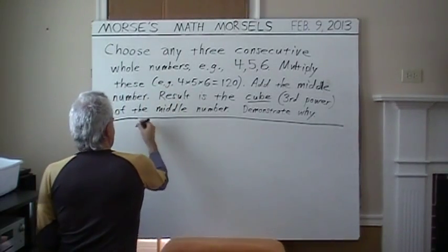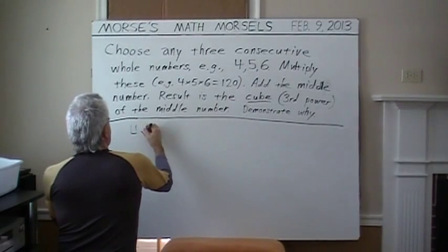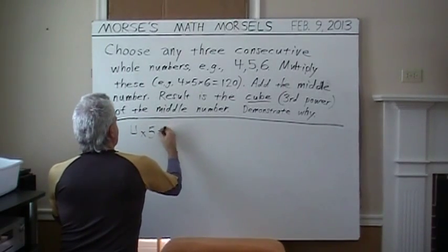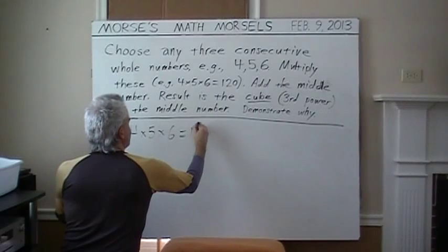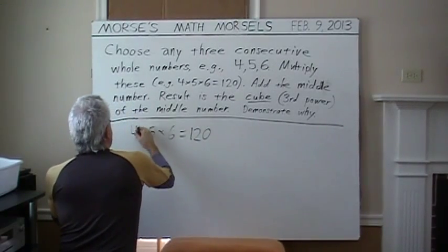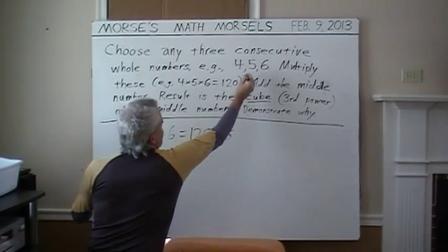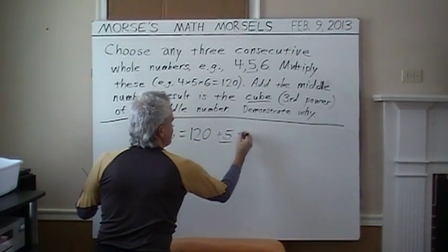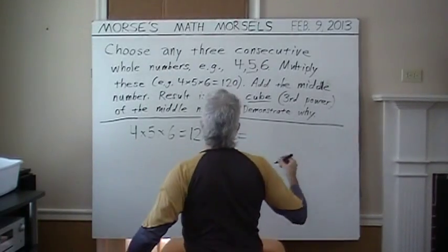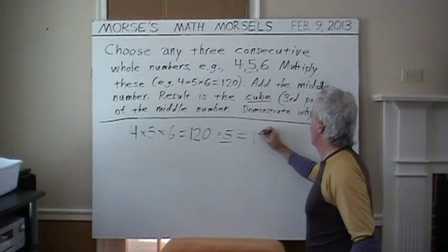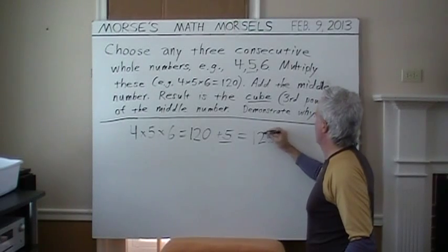So, in this example, if I add the 5, 4 times 5 times 6, let's see, is 120. And then add the middle number of that group, which is 5. The result is the cube, or third power of that middle number.